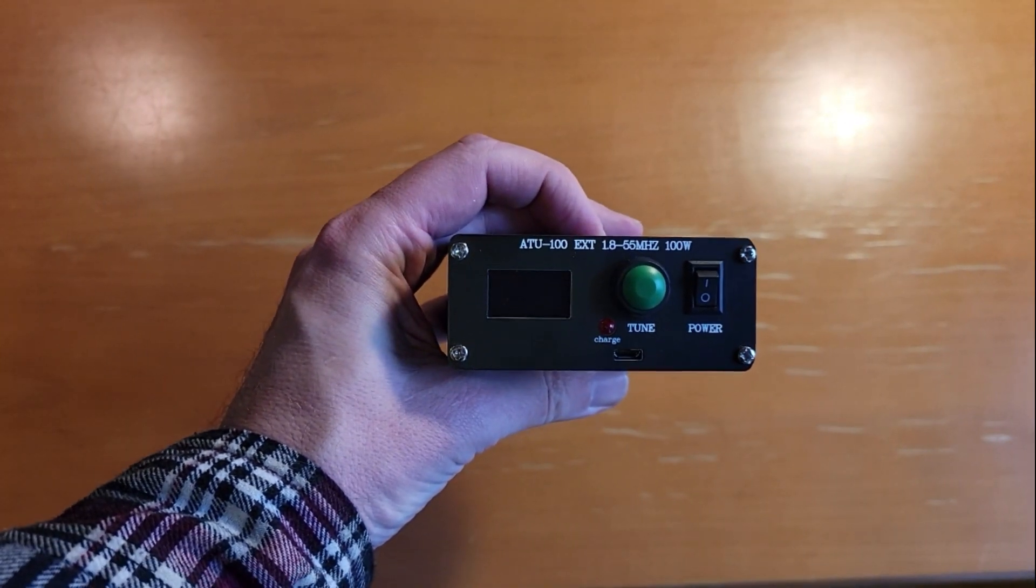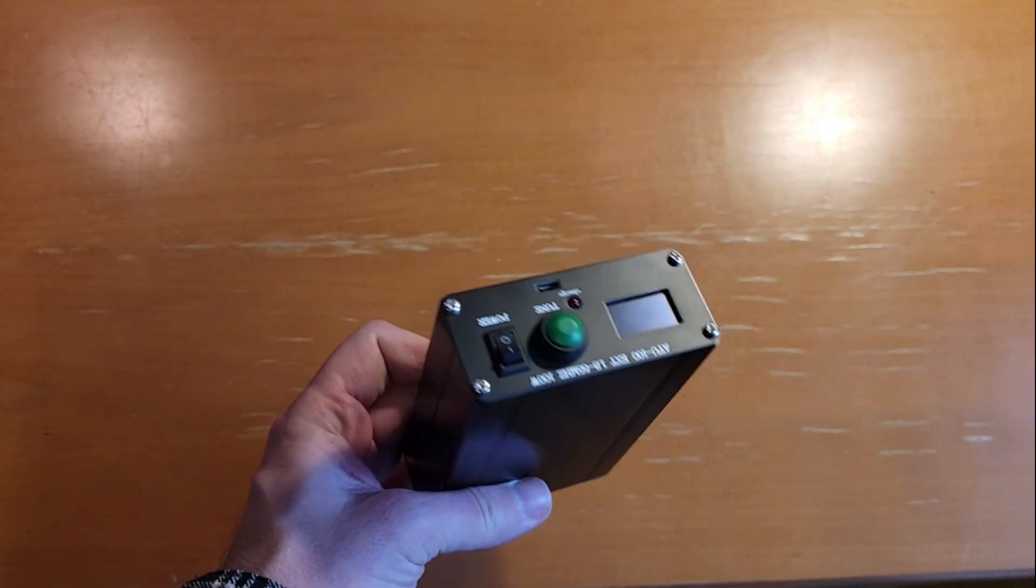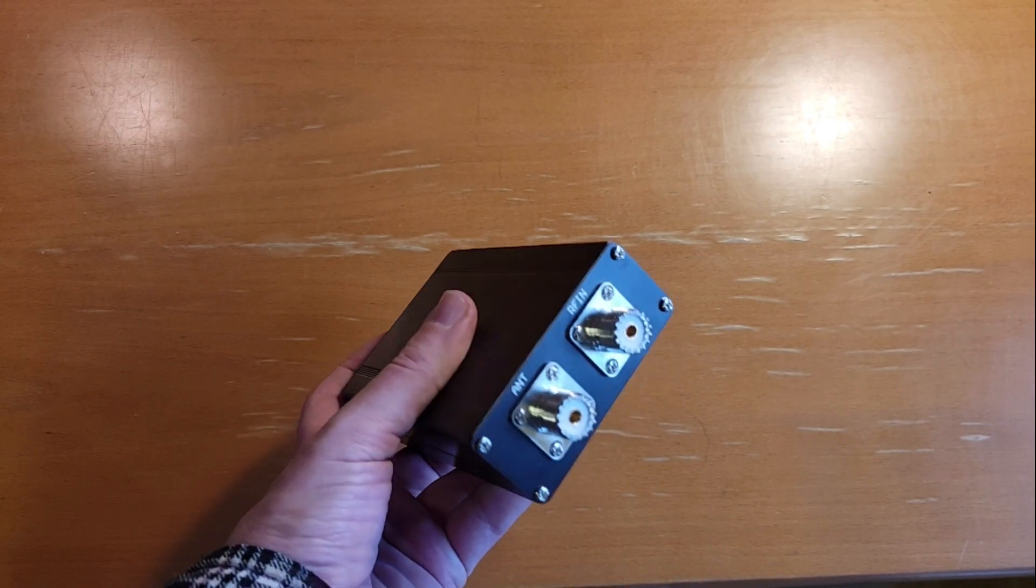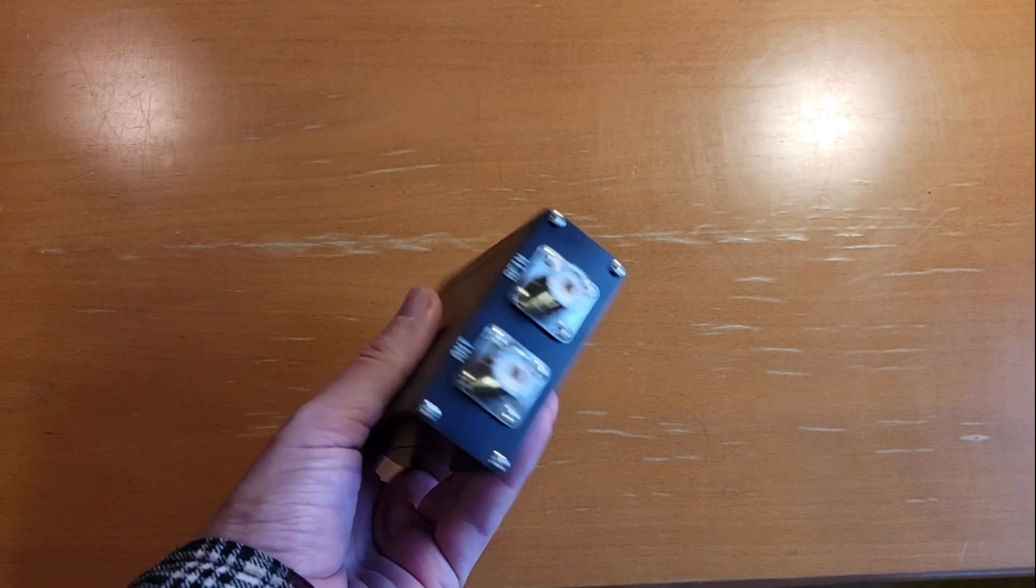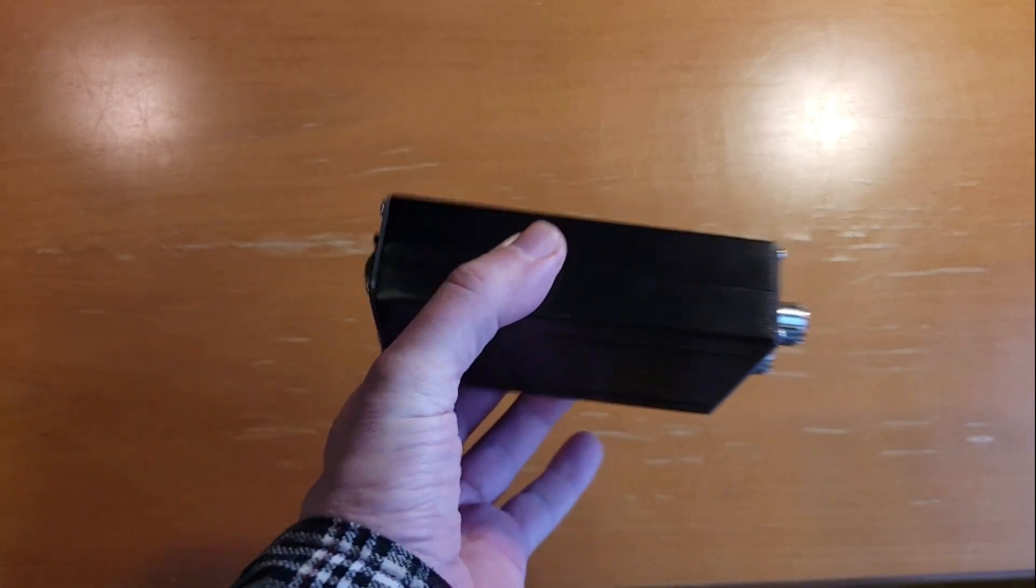This is the ATU-100 portable tuner. There's actually a seven element tuner in here, seven capacitors, seven inductors, and a battery pack, and an OLED screen, and a charging port, and some SO-239s on the back. This thing was meant to go portable.